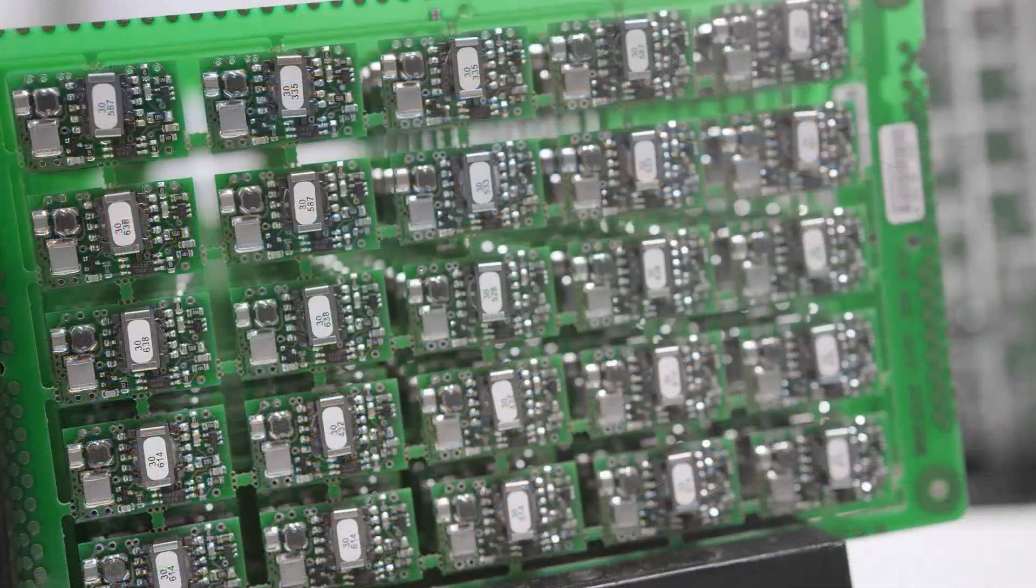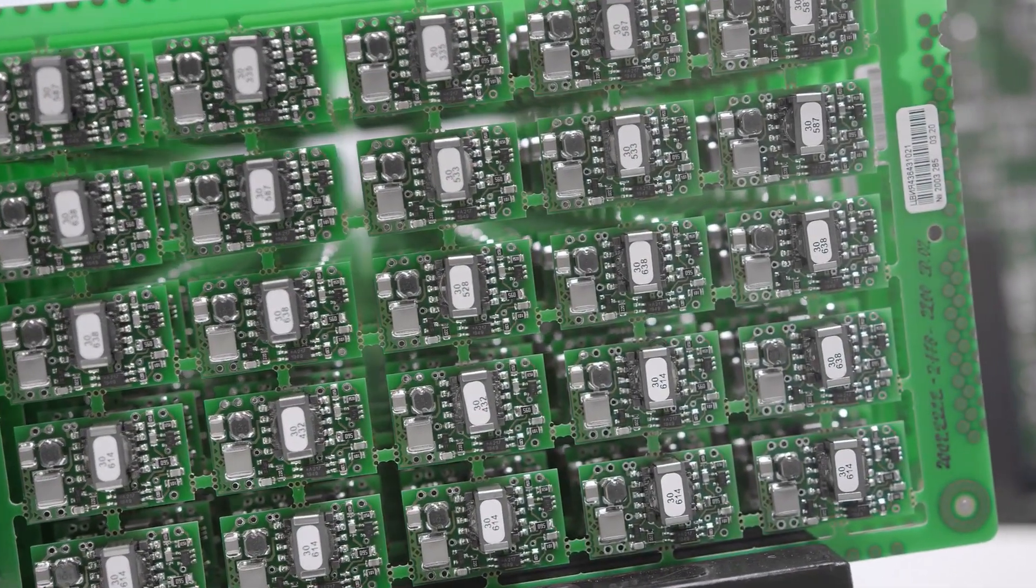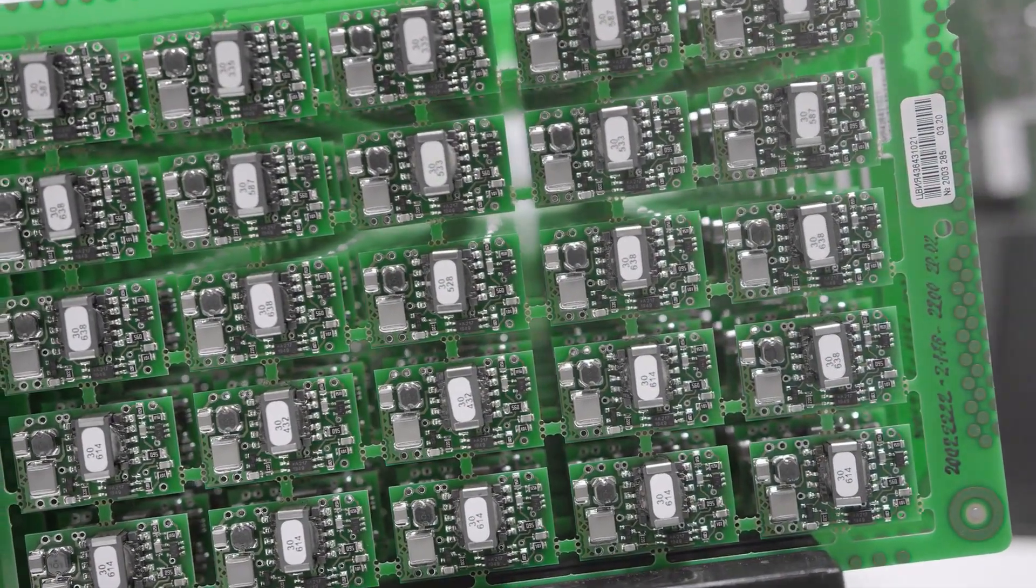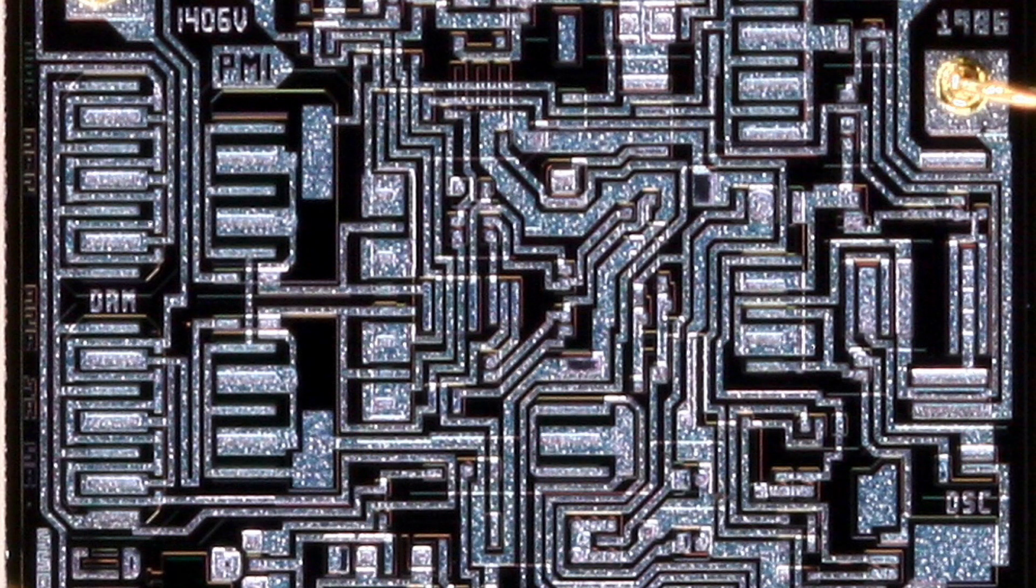Almost every integrated circuit will have an analog component. That component is often pretty small, sometimes as little as 3% of the total thing. Yet this tiny little piece of analog circuitry regularly takes up over half of the integrated circuit's total design cost.